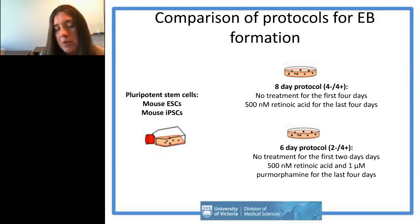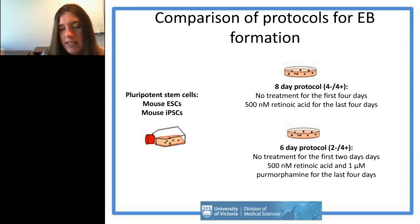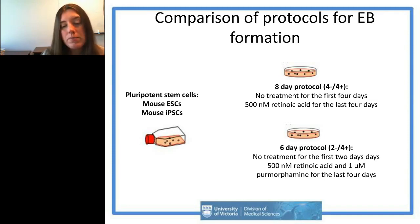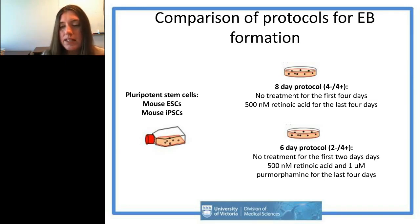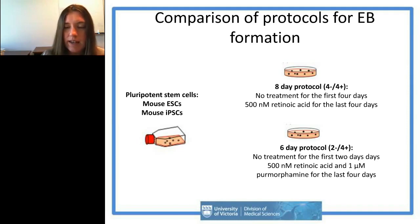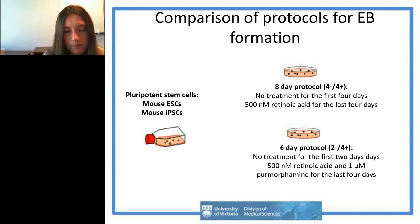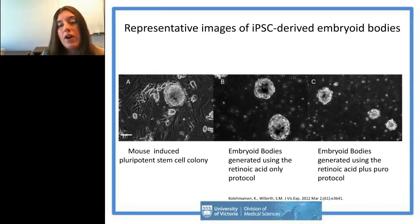A more recent, shorter protocol is six days: two days for aggregate formation, then two days of treatment with retinoic acid and a small molecule called purmorphamine. Purmorphamine is a sonic hedgehog agonist — it performs the same role as sonic hedgehog but is much more affordable than the protein itself, which is consistent with pathways that pattern motor neurons during development.